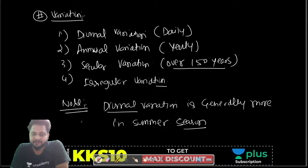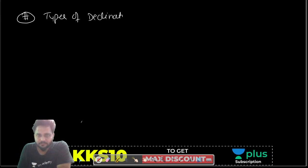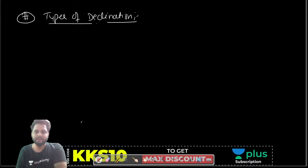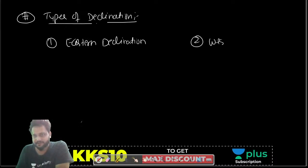So, what is declination and what are the variations in declination? I think you are all clear with these points. If clear, let's move to the next topic — types of declination. Declination is classified into two types: eastern declination and western declination.